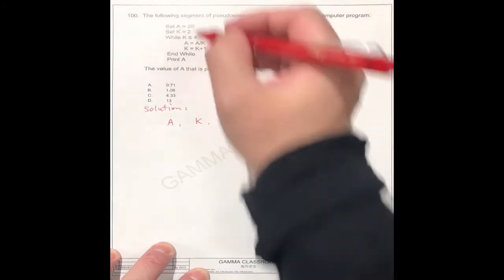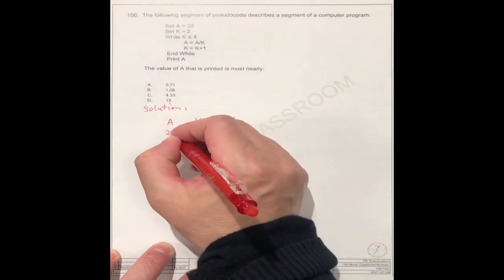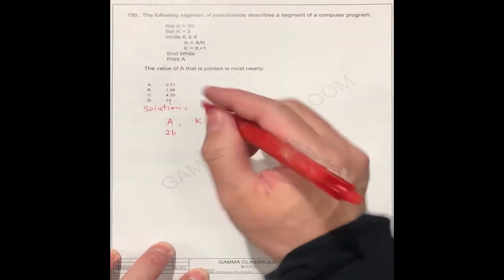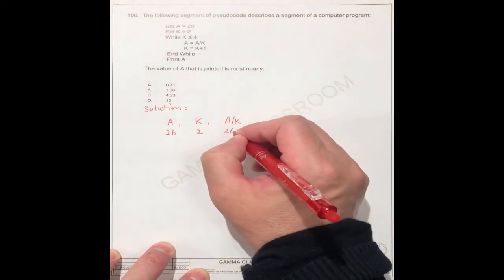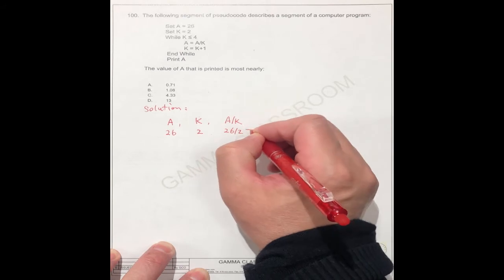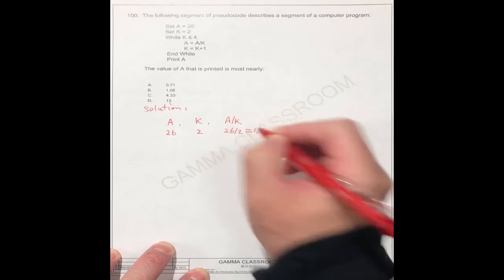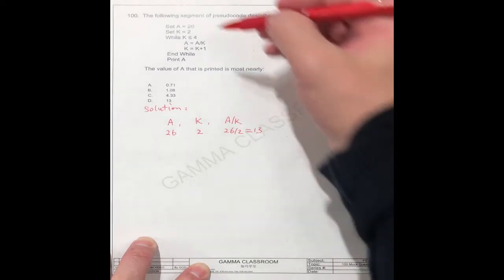The first one, number a is 26, right? And k is 2. How about this one, 26 divided by 2, equal to 13.